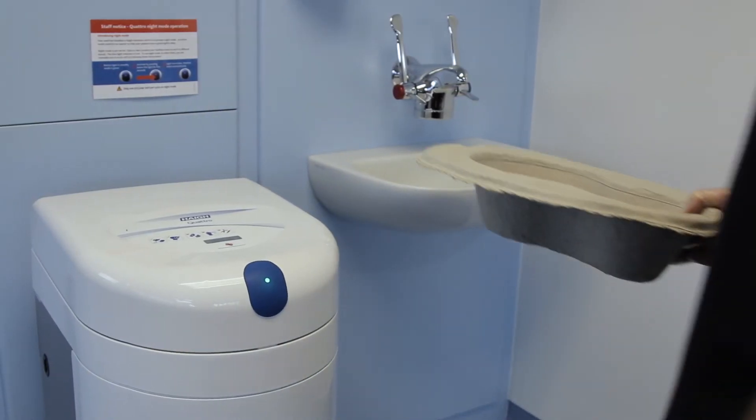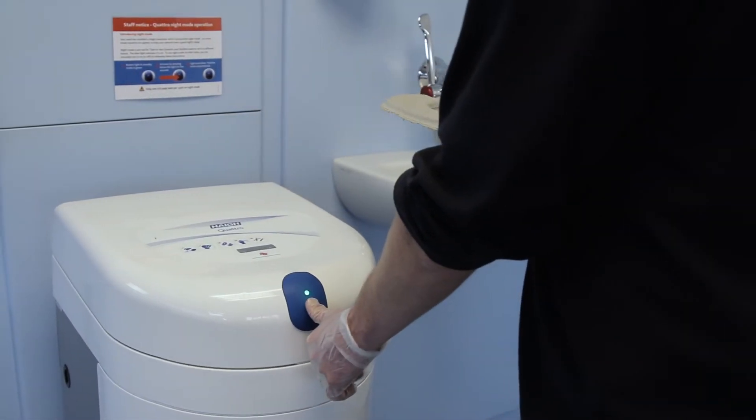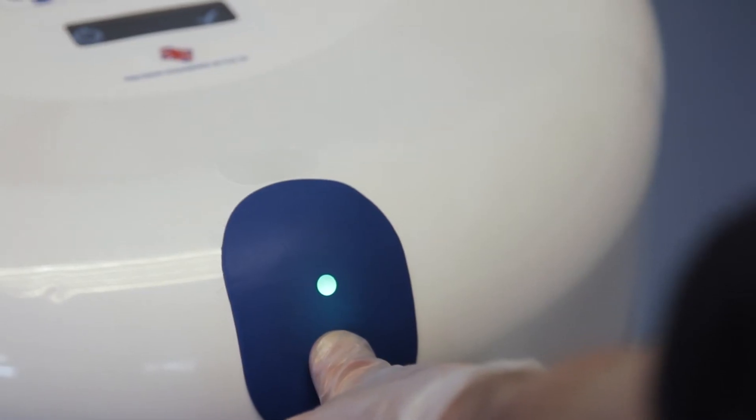To use night mode outside of the preset hours, you can manually activate it by pressing below the green light for 5 seconds. The green light will turn to blue.